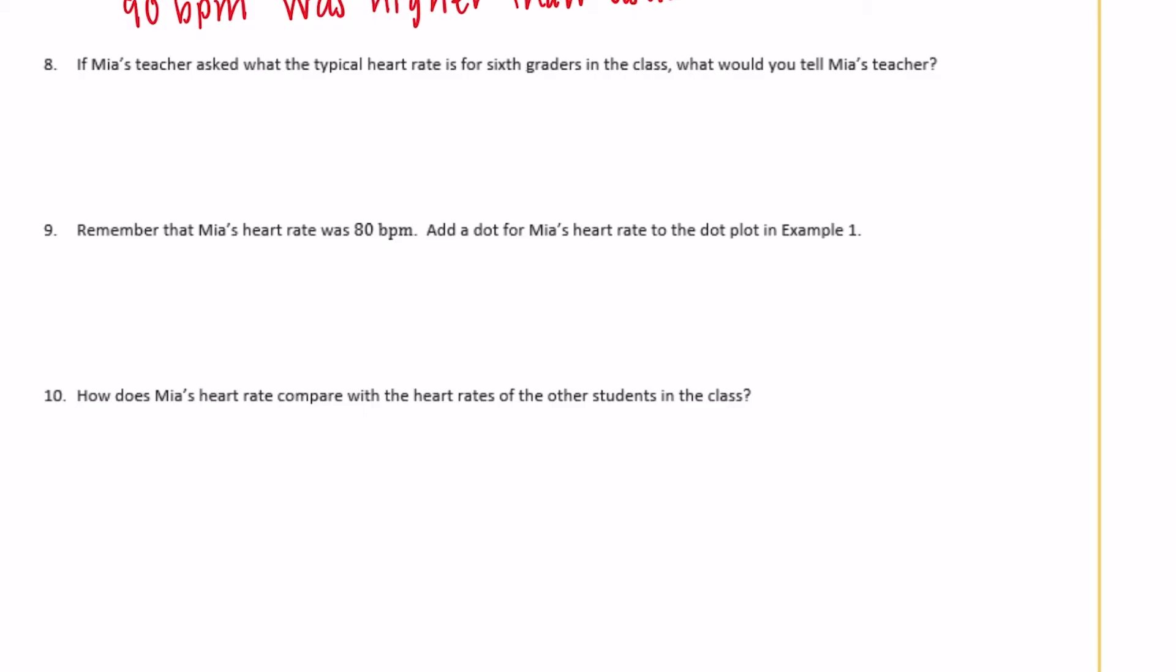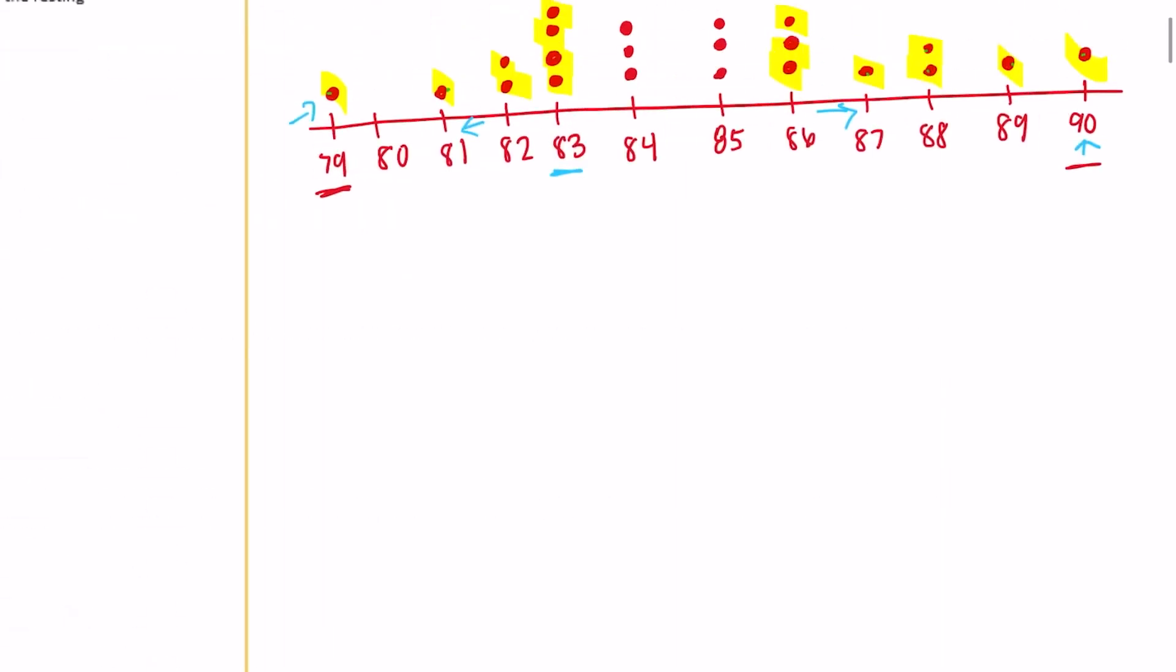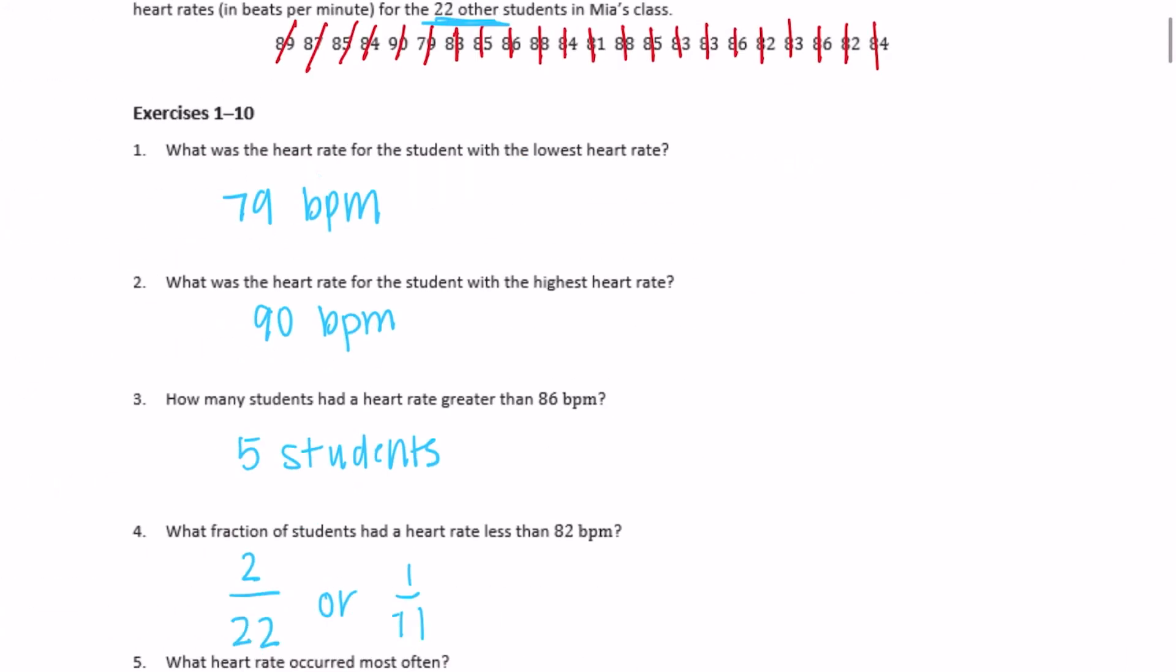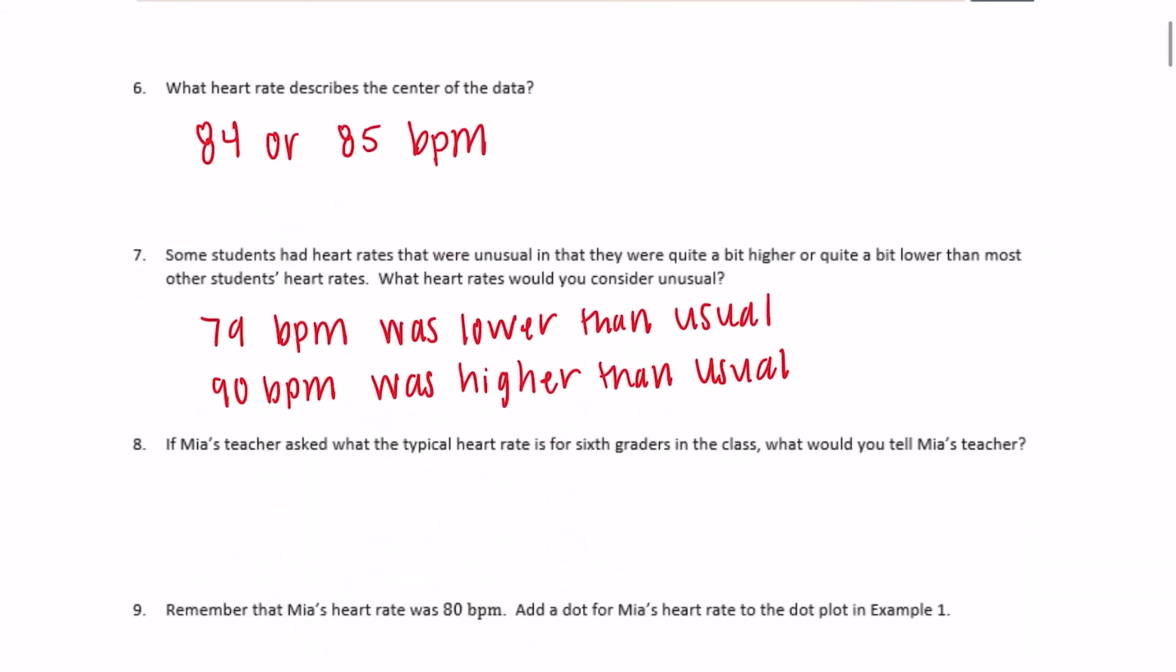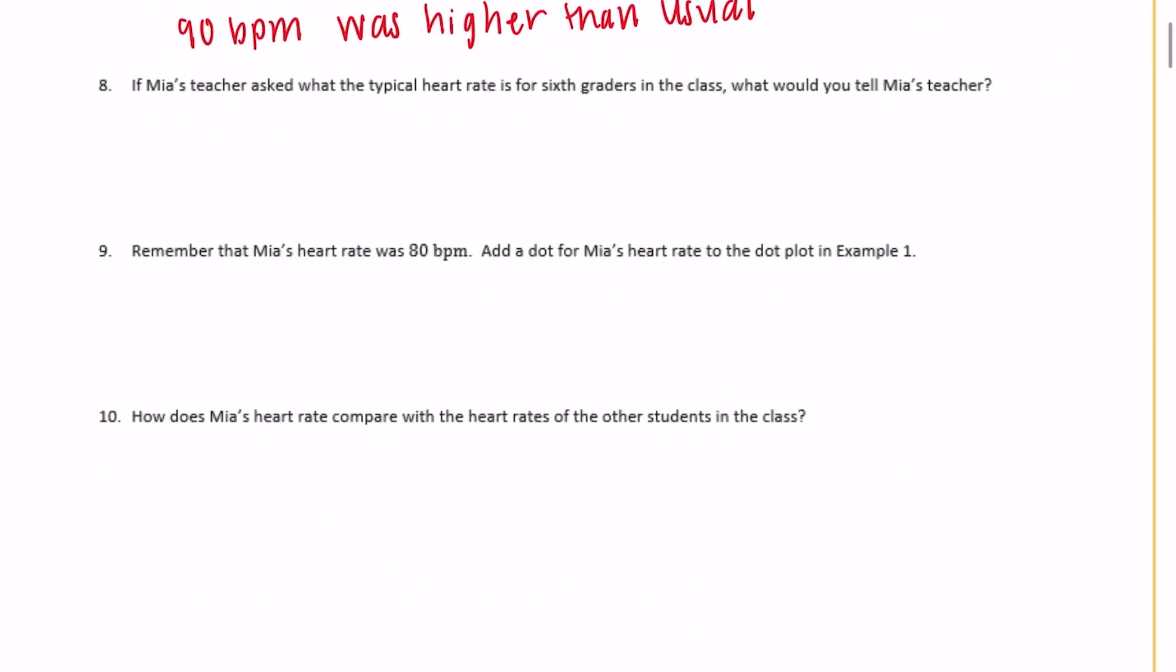Number eight. If Mia's teacher asked what the typical heart rate is for sixth graders in the class, what would you tell Mia's teacher? So looking at this, what would we say that the typical heart rate is? So you could either choose, there's different options. So you could choose 83. You could say 83 is the most typical because it has the most amount of students there. You could say maybe 84 or 85 because they're the ones that are in the middle, so it's kind of like the average. So there are different things, different options or ways to interpret this question. So I'm going to say, I'm going to say that the typical was, let's go with 83. I'm going to say most students had a heart rate of 83 beats per minute.